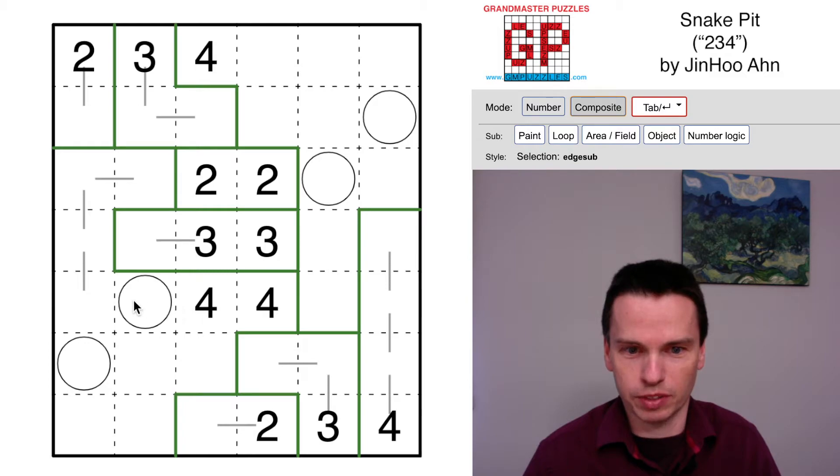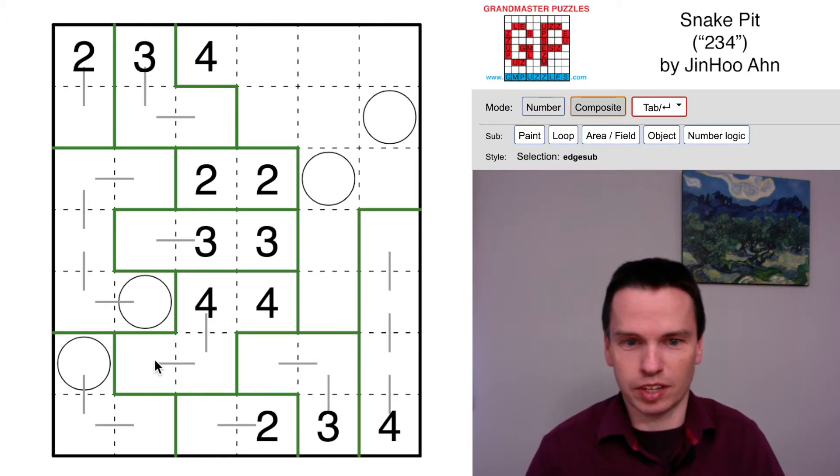This four can't come to the circle because it would end with just three cells, so instead it has to come down and around. In doing that, we see that we make a five unit and three unit snakes to finish the left side.